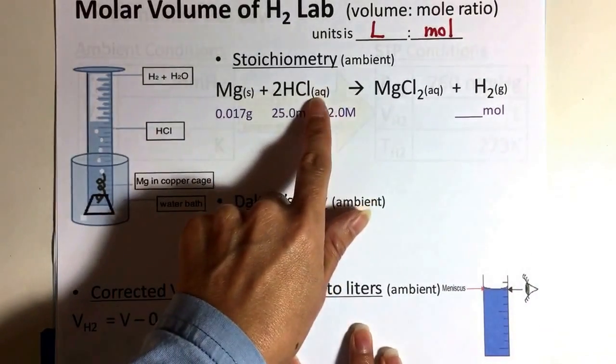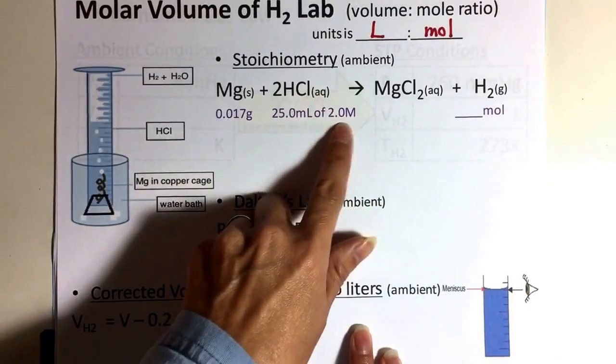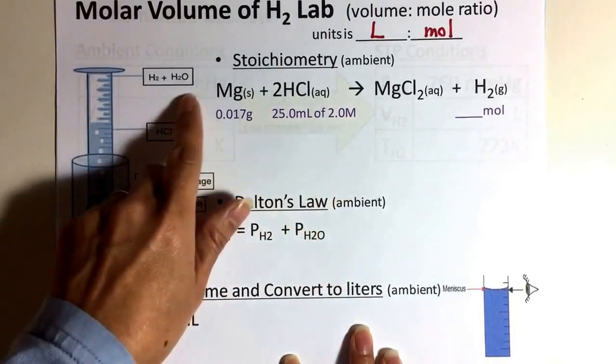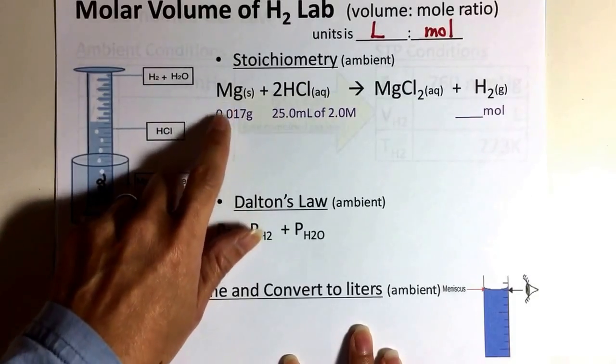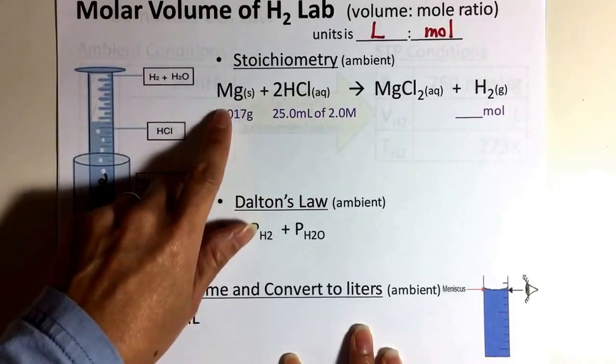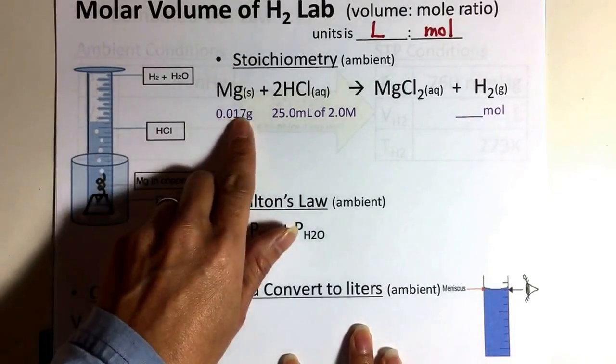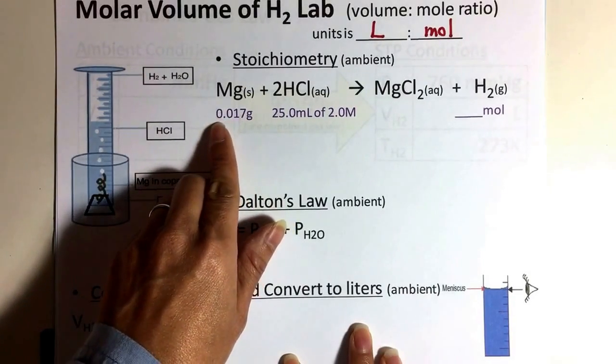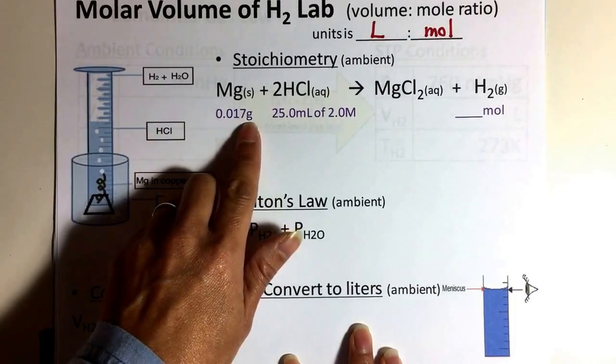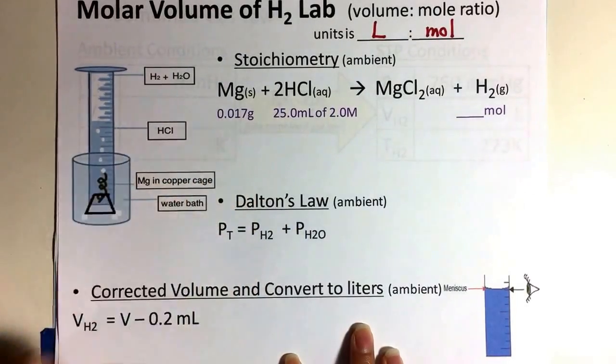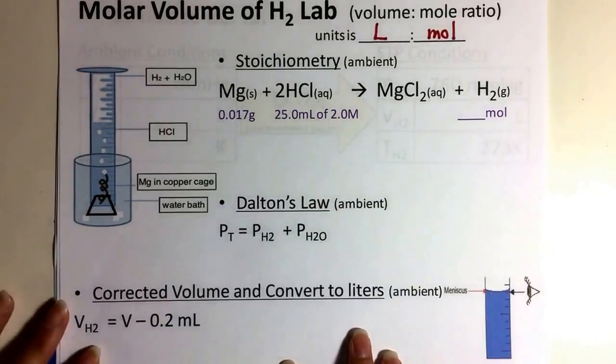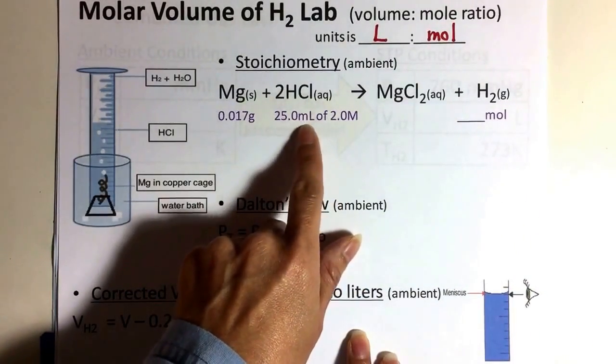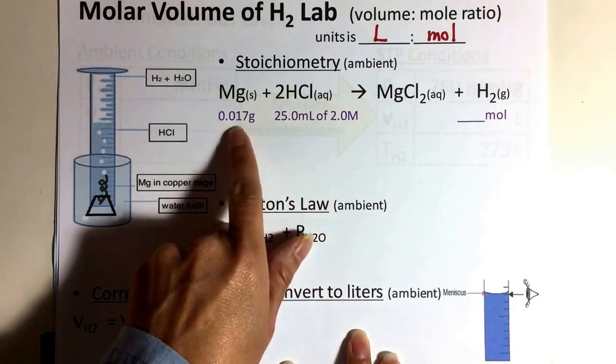Now notice how this is an aqueous substance, and so it oftentimes is in the form of a solution. So it's volume with a certain concentration. This solid can be easily masked out using the ratio of how many grams per one centimeter of that magnesium ribbon. That was pre-calculated for you, and we said that there was 0.017 grams per centimeter, and each of those strips that you reacted were one centimeter.